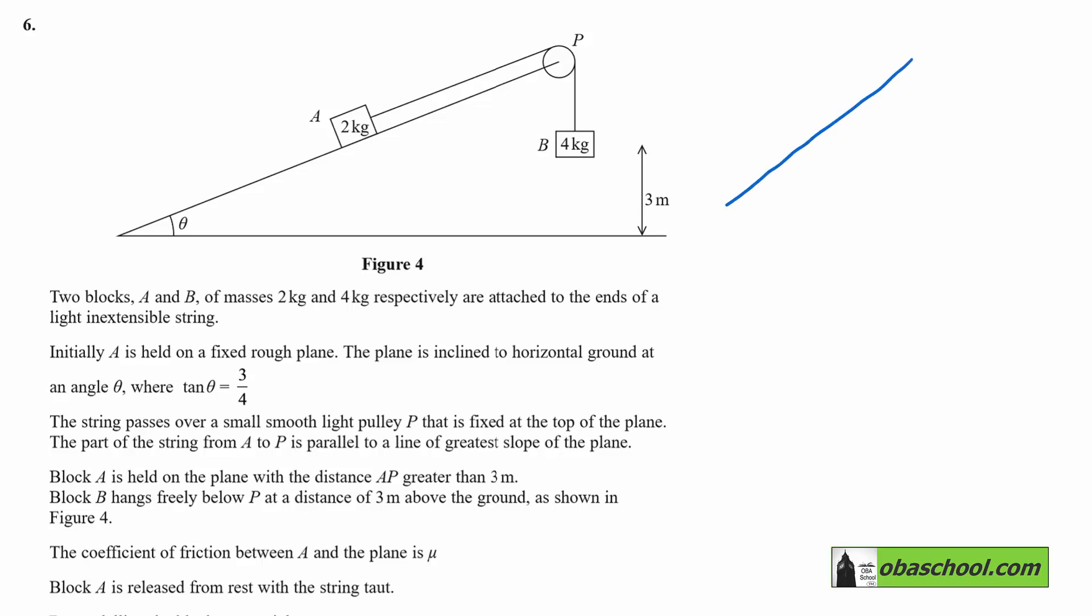Let's deal with that first. We know that if this is theta, tan theta is 3 quarters, 3, 4, 5 triangle, and that's going to give us that sin theta is equal to 3 fifths, and that cos theta is 4 fifths.